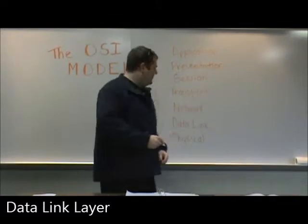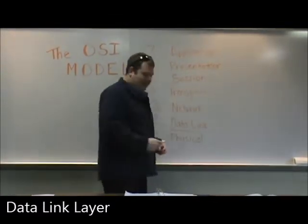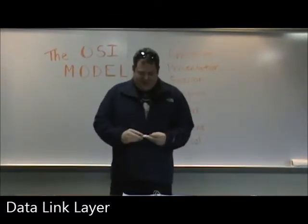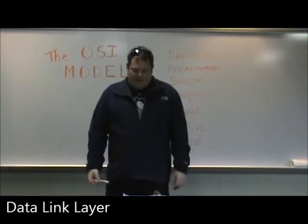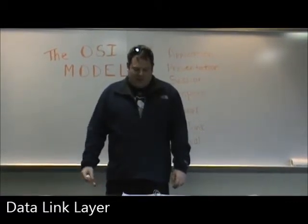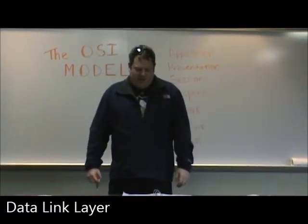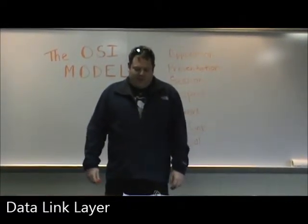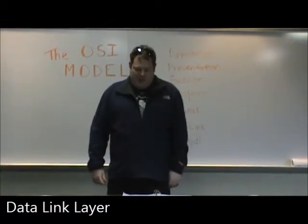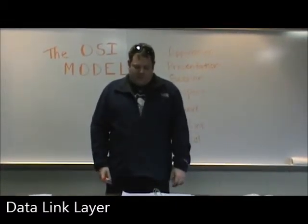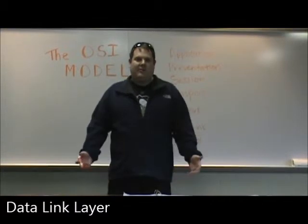The data link layer is the second layer of the OSI Model. This layer is responsible for managing access to the network medium and delivering data frames from the sender to the receiver, or from the sender to an intermediate device like a router.